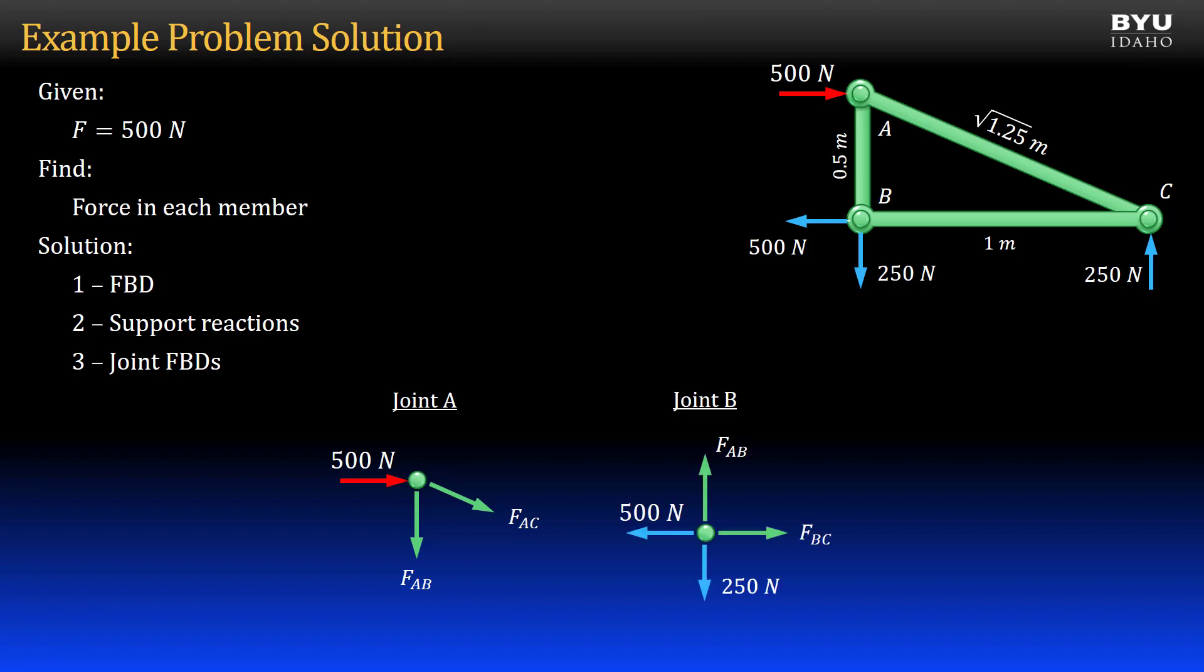Here is a free body diagram of joint B. There are four forces acting, two of which are unknown. Here is the free body diagram for joint C. There are three forces acting on it, two of which are unknown. I can start summing forces at any joint, since they all have just two unknowns.